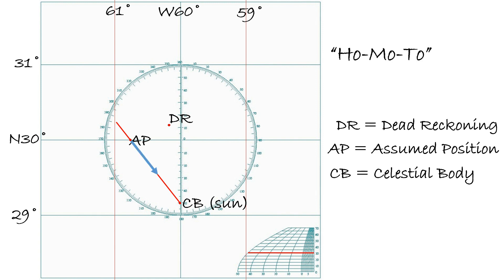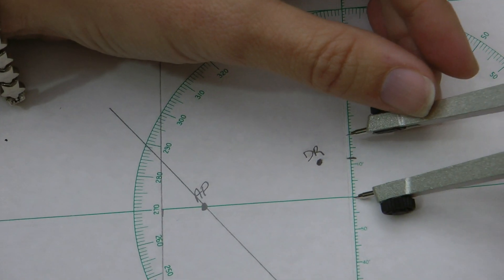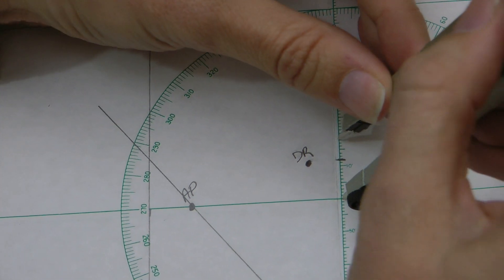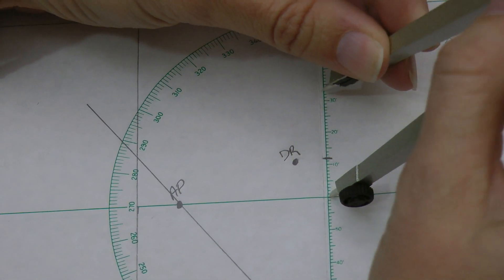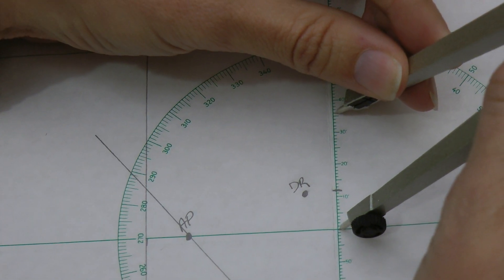Let's say our altitude intercept is 35.9 arcminutes, so we use our divider to measure that distance using the scale on the center line, and mark this position on the azimuth towards our celestial body.